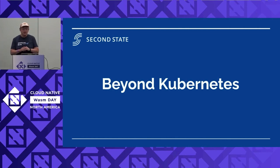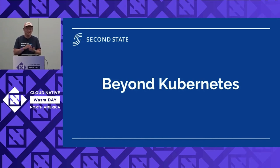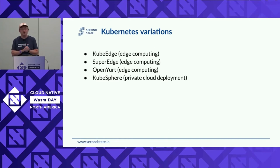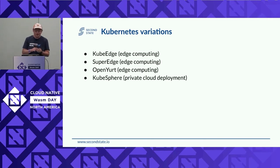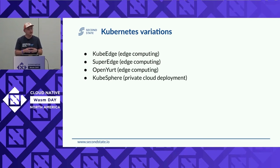Beyond Kubernetes — we now have a way to run Wasm workloads in a Docker-like fashion in a Kubernetes-like cluster. Beyond regular Kubernetes, there are quite a few Kubernetes variations for edge computing. The top three are all in CNCF today — KubeEdge, SuperEdge, OpenYurt — all what they call Kubernetes for the edge. And then there's KubeSphere, which is a private cloud Kubernetes deployment integrating with Microsoft Dapr and having their own function-as-a-service. There are lots of innovations around this area. They all use the same OCI infrastructure.